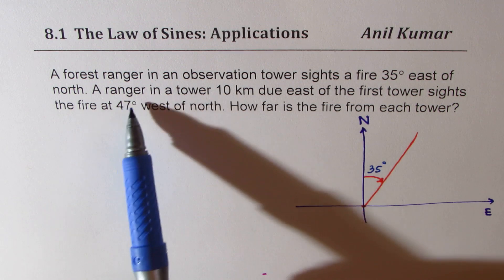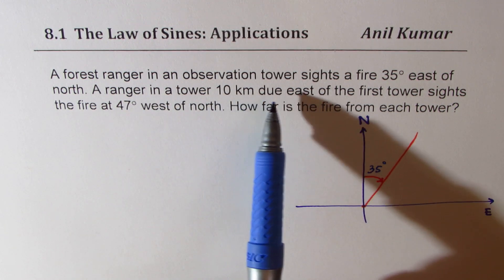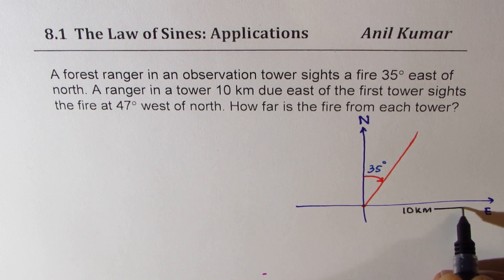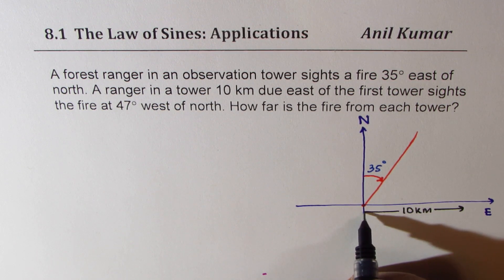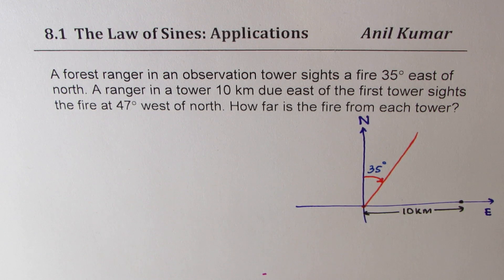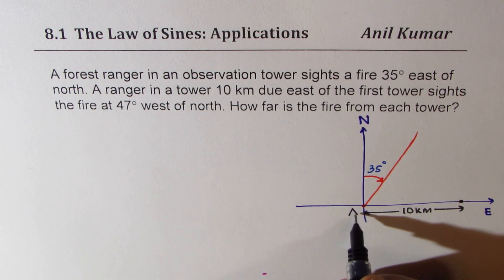A ranger in a tower 10 kilometers due east means the other tower is 10 kilometers on the east of this. So it is 10 kilometers, somewhere here. Let's call this point as point B. So let's say this is A and this is B.